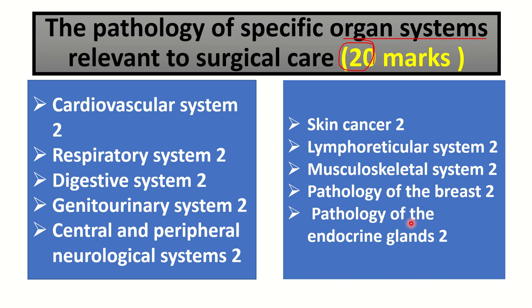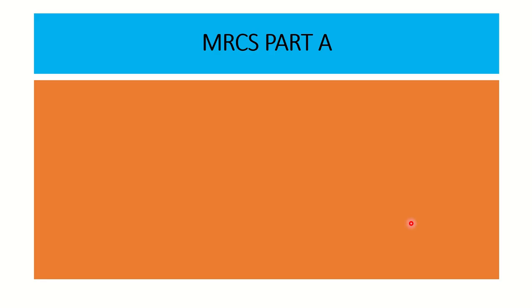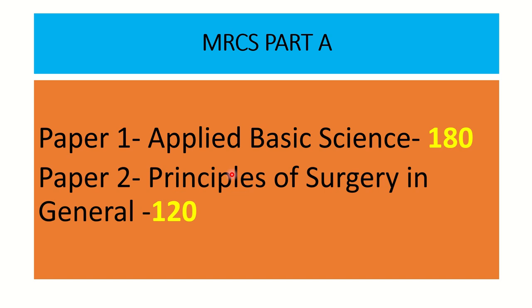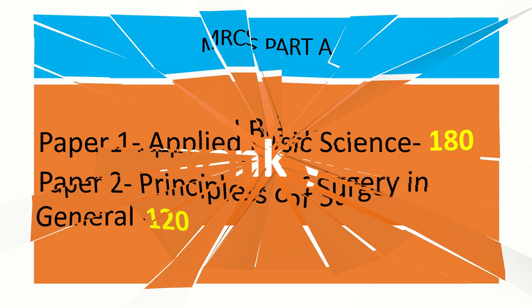It is very useful to note that the RCS completely follows the syllabus, so it will be very easy for you to prepare for the MRCS Part A exam. In summary, the MRCS Part A has Paper One covering Applied Basic Science worth 180 marks, and Paper Two worth 120 marks, for a total of 300 marks. Thank you — this was a brief overview of the pathology syllabus for the MRCS Part A exam.